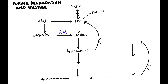Hypoxanthine gets converted to xanthine, and xanthine gets converted to uric acid. The enzyme responsible for these last two steps is an important one, called xanthine oxidase, and it works at both of these steps.